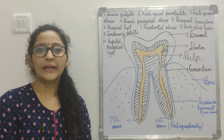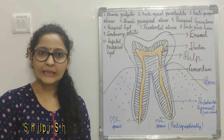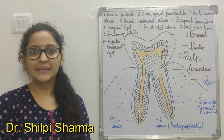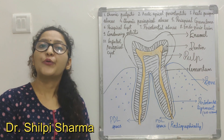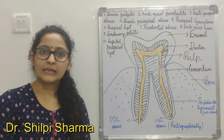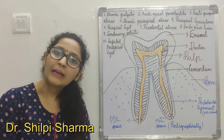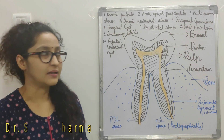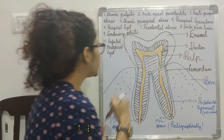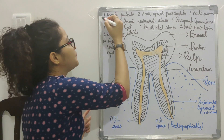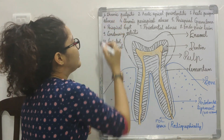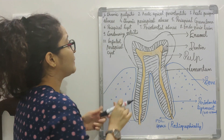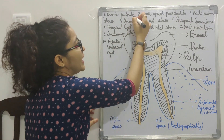Hi everyone, welcome back to my channel. In this video we will be discussing radiographic diagnosis of pulp and periapical lesions. So let's get started. The first one is chronic pulpitis — chronic pulpitis is never given as a radiographic diagnosis.